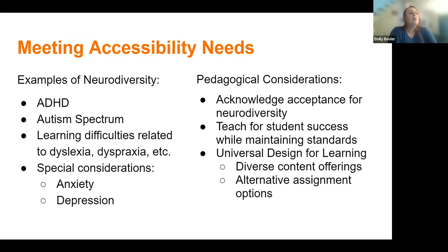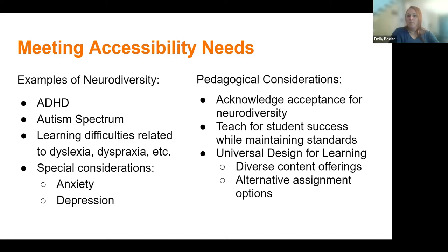In terms of ways we can support our students — not an exhaustive list, just some big-picture points from those two resources — the first is to acknowledge acceptance for neurodiversity. A conference I attended in the fall discussed diversity statements in syllabi. We have a diversity statement for SUNY Oswego and a statement about accessibility services, but I think explicitly acknowledging a safe place in the classroom for neurodiverse students is important, especially because disclosure can be very stress-inducing.